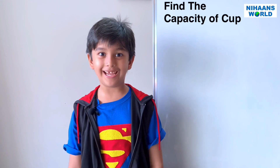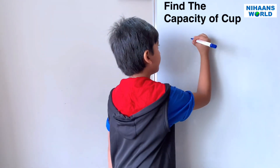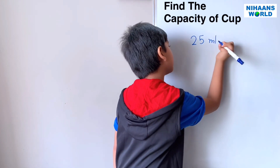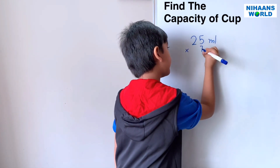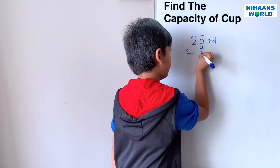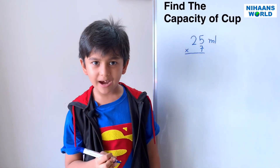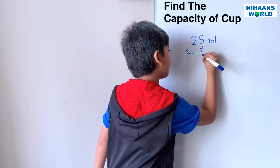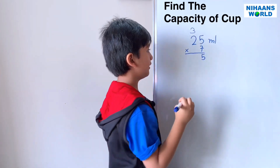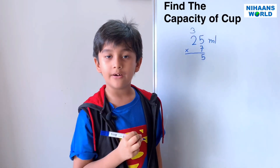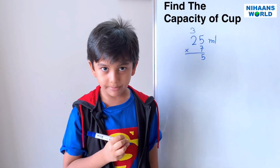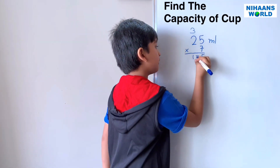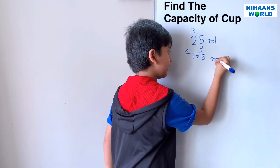Friends, let's calculate. Twenty-five milliliters multiplied by seven is equal to — what are seven fives? Thirty-five. So five will come here, three carry over. Seven twos are fourteen, and fourteen plus three is seventeen. So the answer is one hundred and seventy-five milliliters.